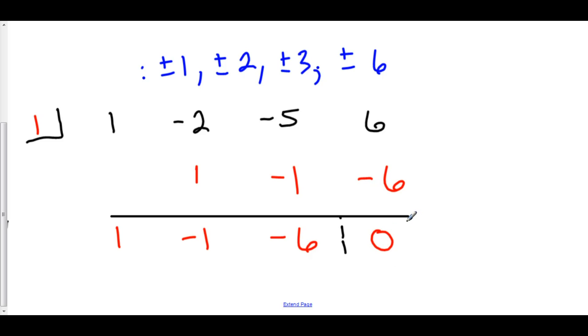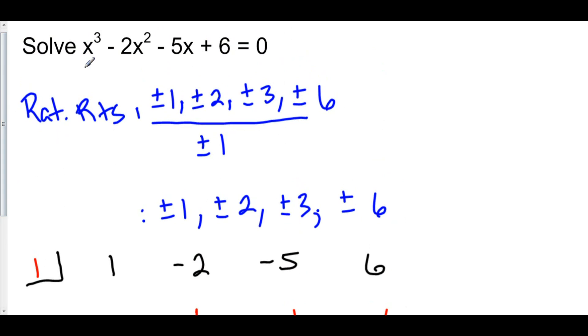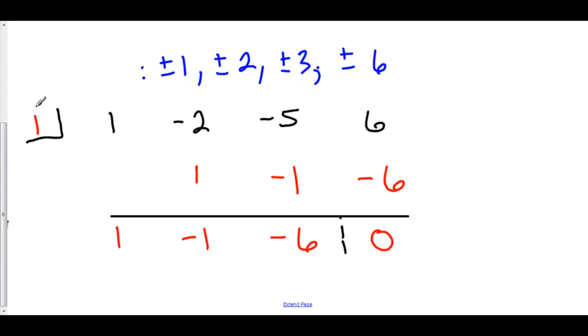Because the remainder is 0, we got it on the first shot. 1 is, in fact, a root of this polynomial on the left-hand side. Furthermore, if 1 is a root, then that means x - 1 is a factor of that polynomial.